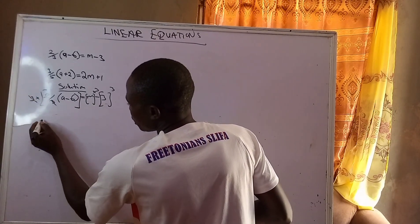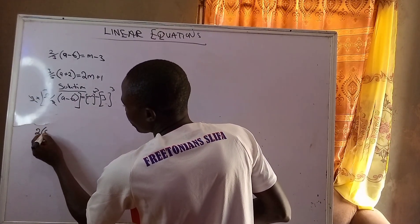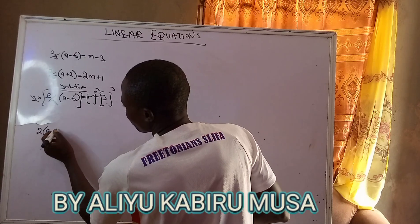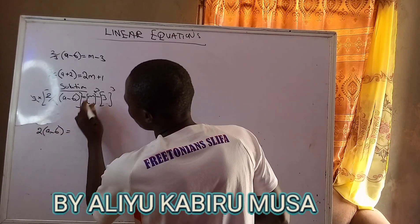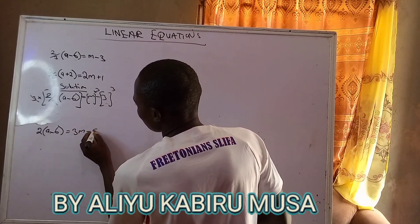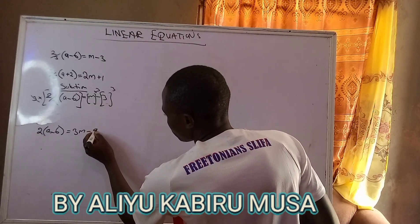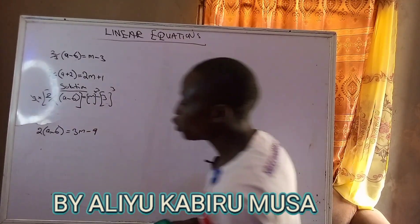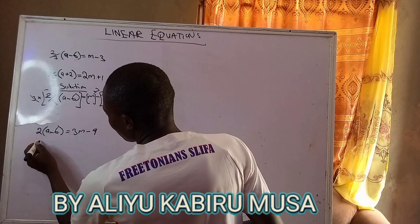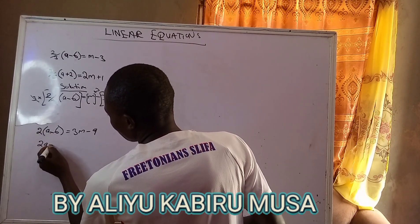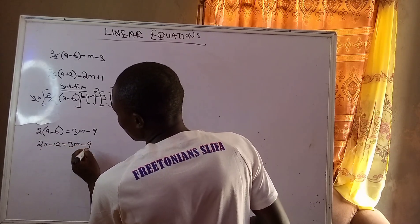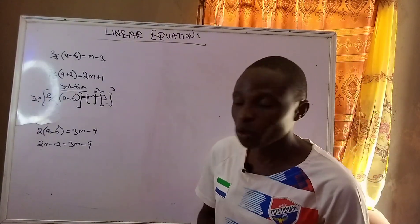After cancellation, I will have 2 open bracket a minus 6 close bracket equals m times 3, which is 3m, minus 3 times 3, which is 9. Then I open the bracket — the relationship between 2 and the bracket is multiplication — so 2 times a is 2a, minus 2 times 6 is 12, equals 3m minus 9.